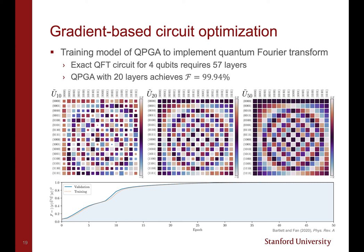As a demonstration of this optimization routine, we trained a model of a QPGA with 4 qubits and 20 circuit layers to implement a quantum Fourier transform. Exactly preparing a QPGA to implement this operator requires 57 circuit layers, but a QPGA with 20 layers can use gradient-based circuit optimization to achieve a fidelity of 99.94%.